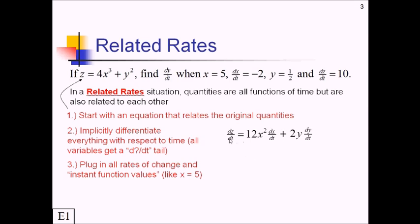dz over dt, that was 10. x they told us up here was 5. So we've got 12 times 5 squared. And dx over dt they gave us was negative 2. y they gave us was 1 half. And dy over dt they didn't give us at all, that's what we have to solve for.